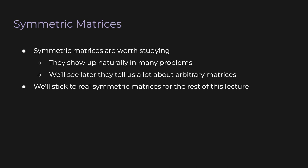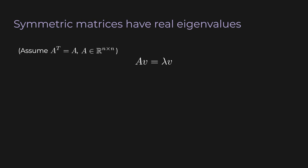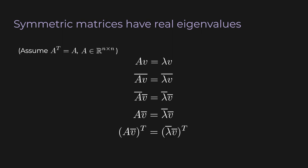Now we've got all our tools — time for our first proof. We're going to prove that symmetric matrices have real eigenvalues. Assume the matrix A is symmetric and real, and start with the eigenvector definition: Av equals lambda v. Let's take the complex conjugate of both sides. Remember that the conjugate of a product is the product of the conjugates. Since the matrix A is real, the conjugate does nothing. Now let's take the transpose of both sides and distribute it, remembering to reverse the order. Lambda and its conjugate are scalars so the transpose does nothing.